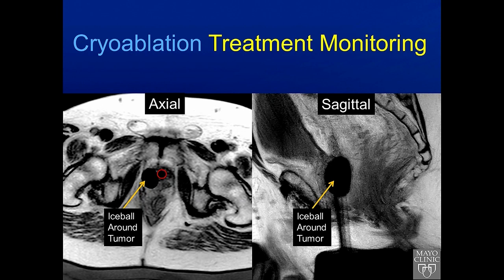The tumor can be targeted with MRI, and then during the cryoablation we monitor the growth of the ice ball, shown here in black. We can see its relationship to the urethra, where we have a urethral warmer, and the rectum posteriorly, which we have displaced with injection of saline between the prostate and the rectum.